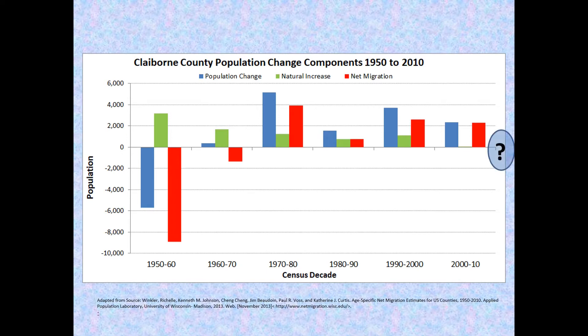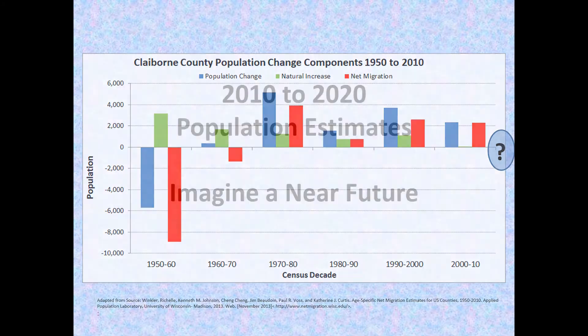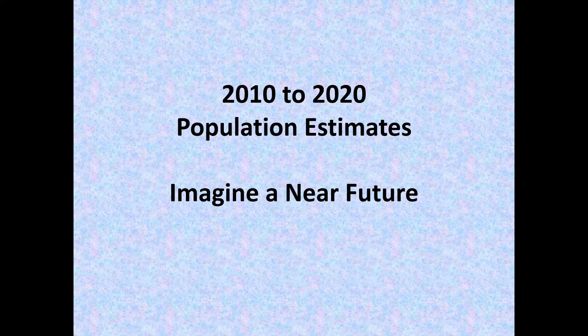But what about 2020 and beyond? Natural increase and net migration data for 2010 to 2020, continuous with the previous decades, may be published later in 2021 or early 2022. In the meantime, the Census Bureau released population estimates, along with estimates for natural increase and net migration, for the years 2010 to 2020 in May of 2021. Given that the estimate series covered 10 full years, summary decade figures may be created, comparable to decade figures based on prior decennial censuses and other sources of data.